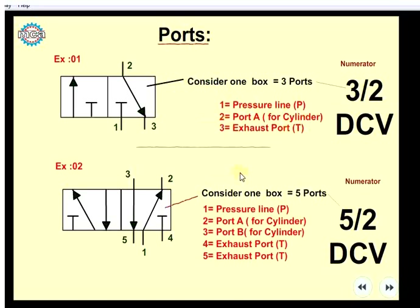Let's take a look at the numbering system. I have to identify the numbers as well. The numbers are one, two, three, four, and five. I will mention this in English letters: the first is P, the next is A, then B, then T. You can also use T, Q, R, S.